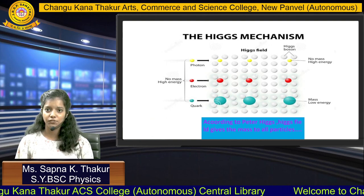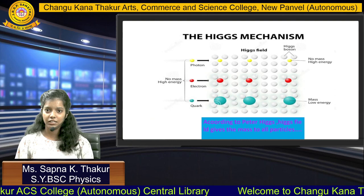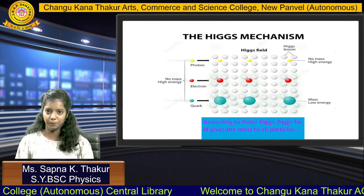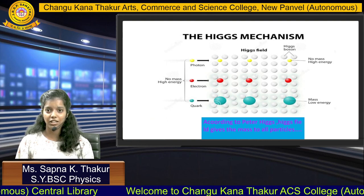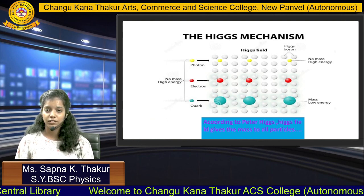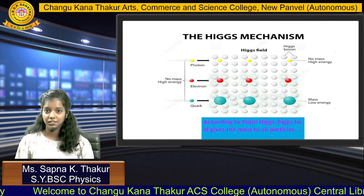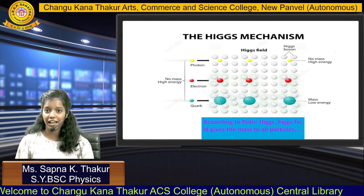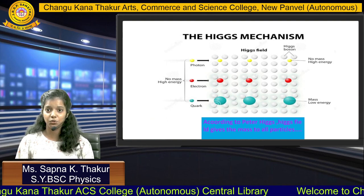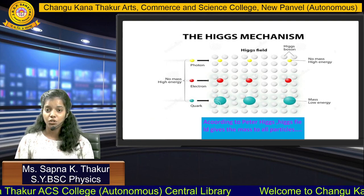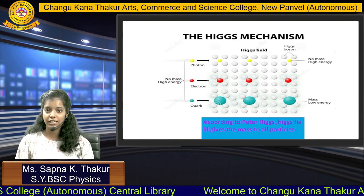Consider a room filled with physicists chatting. Suppose an accountant enters this room — then what happens? No physicist would go to them and chat, so the accountant moves through the room easily. But suppose Albert Einstein enters the room — then all the physicists would go to him and chat, so Einstein would not move easily through the room.